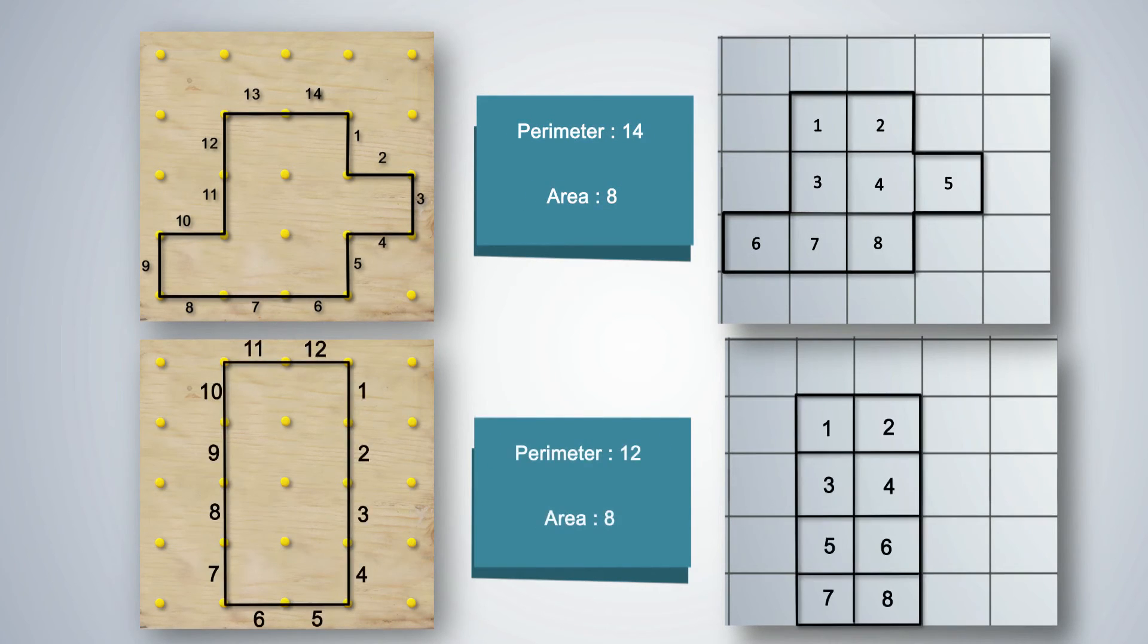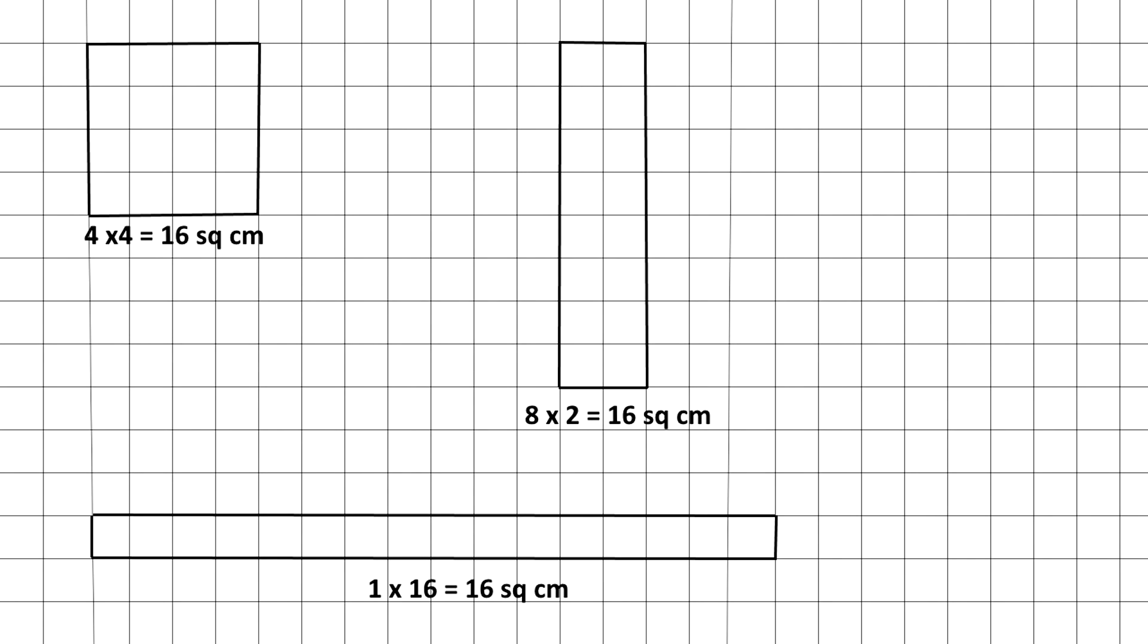On the other hand, the area may be 8 square units for 2 other shapes. But the perimeter in this case may or may not be the same. How many shapes can students draw whose area is 16 square units? What is the perimeter in each case? Let them draw a few more examples on square rule books.